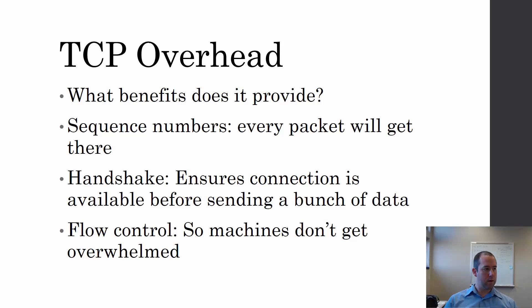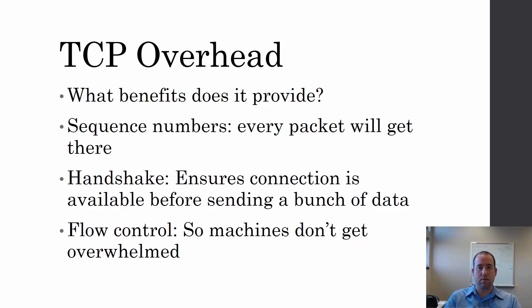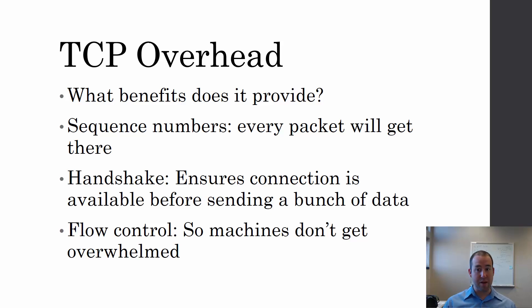The last thing we'll go over is TCP overhead. TCP has a 160-bit header instead of a 64-bit header like UDP. It handles source and destination port, but really the benefits it provides are extremely useful if you need them. Some protocols don't need them and prefer not to have the overhead, but TCP provides a lot of benefits. Sequence numbers and acknowledgements make sure that every packet arrives intact and gets put back together in the same order.